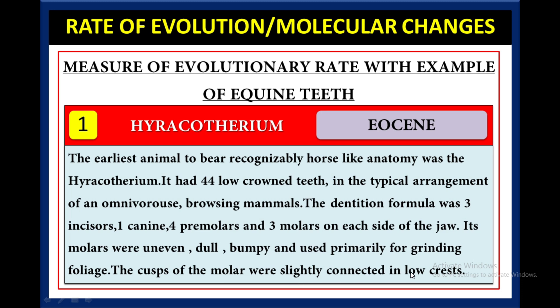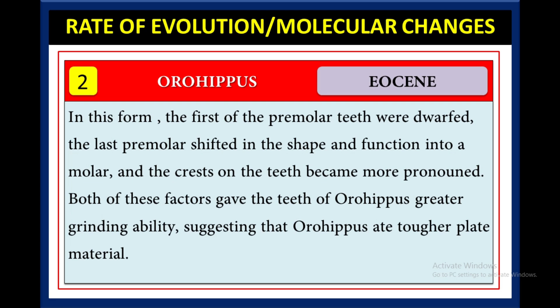Then Orohippus came in the Eocene period. The first premolar teeth were dwarfed, the last premolar shifted in shape and function into a molar, and the crests on the teeth became more pronounced. Both of these factors gave the teeth of Orohippus greater grinding ability, suggesting that Orohippus had tough plant materials in its diet.